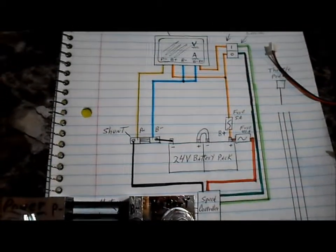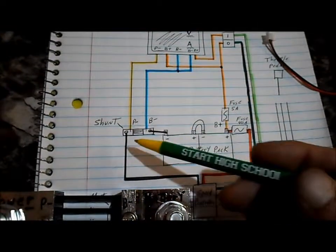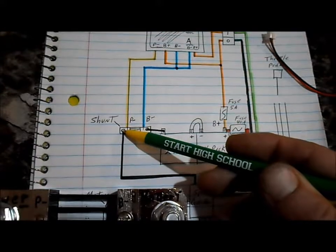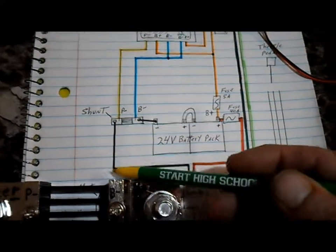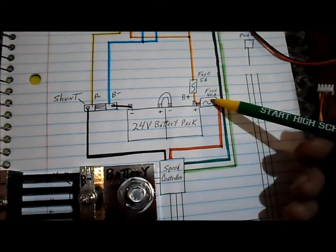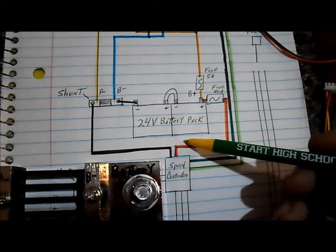So that's how you would hook up the meter. And then to complete the circuit, your negative battery cable would go onto your speed controller. And your positive battery cable would go onto your speed controller.